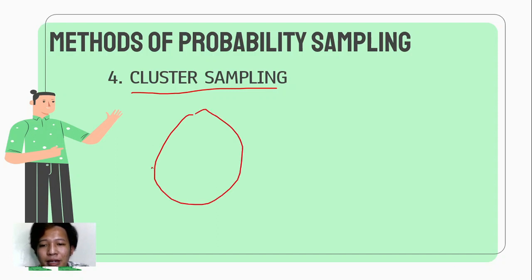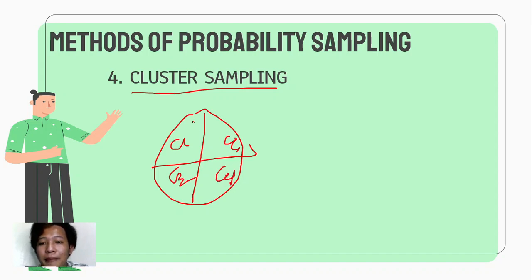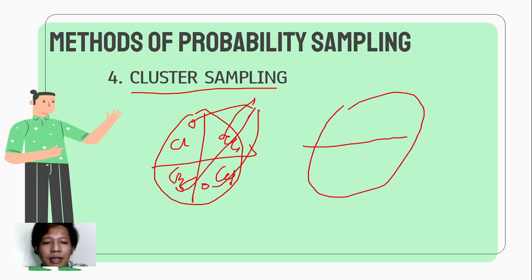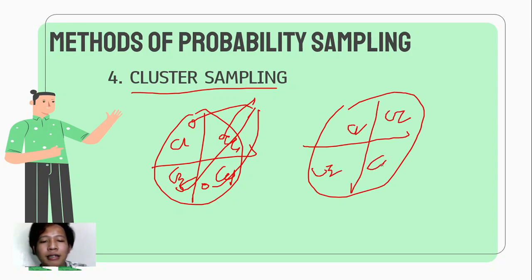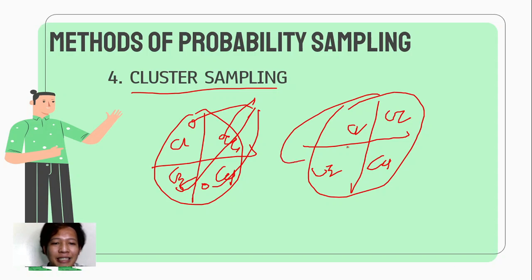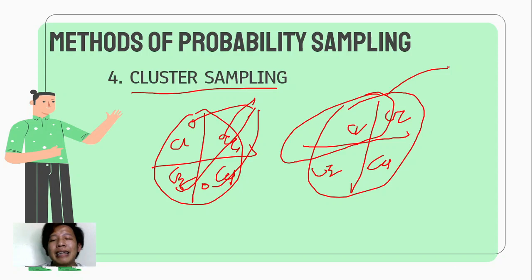For example, meron kang cluster 1, cluster 2, cluster 3, cluster 4. Depende sa'yo kung bawat cluster kukuha ka ng sample, or randomly — yung pangalan nila ilalagay mo sa isang fishbowl, tapos pipili ka lang ng isang cluster para maging sample mo. That's possible. And those are the methods of probability sampling.